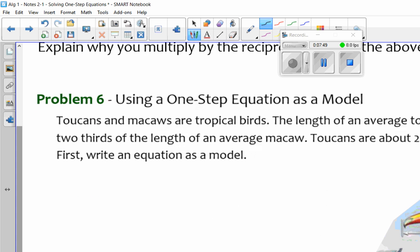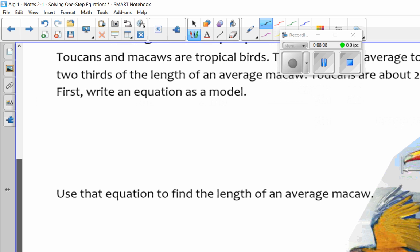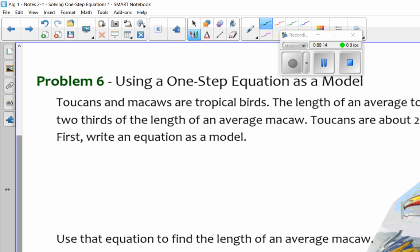This one, we had to write an equation for it. The length of an average toucan is about two-thirds of the length of an average macaw. Toucans are about 24 inches long. First, write an equation as a model. We have to be able to look at that, think, what do I have? How do I write this? This is a big skill that we have to be good at.